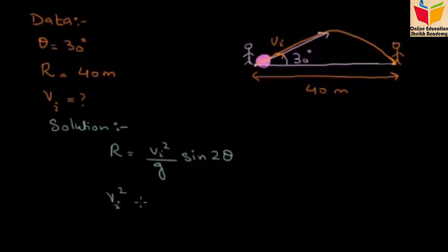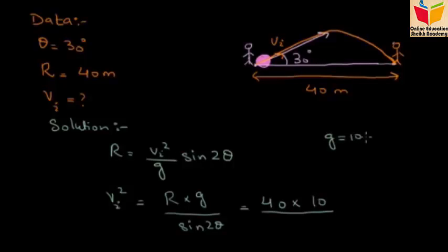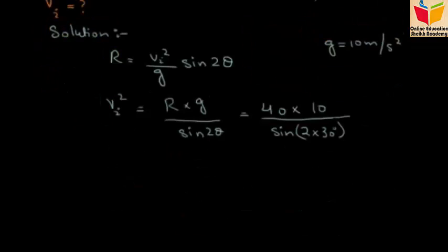Vi squared we keep on one side and the rest of the terms go on the other side. Sine of 2 theta will multiply here and this will divide. Now let's input values - all the values are given. 40 multiplied by g value, which is 10 meters per second squared, divided by sine of 2 times theta. The value of theta is 30 degrees, so we input these values and solve this equation.